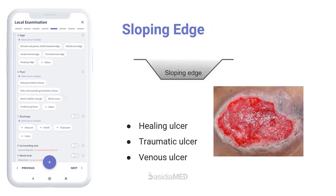The presence of a sloping edge indicates that epithelium is growing in from the ulcer edge in an attempt to heal it, and hence is characteristically seen in healing ulcers. Sloping edge is usually seen in superficial ulcers. It is also associated with traumatic ulcers and venous ulcers.